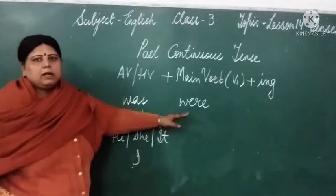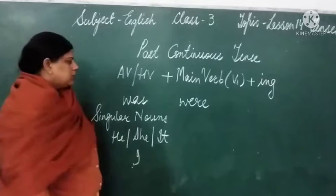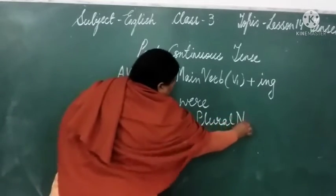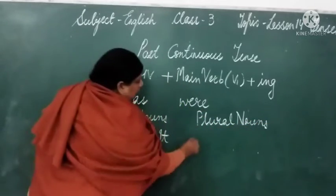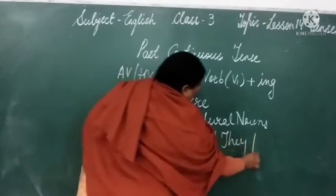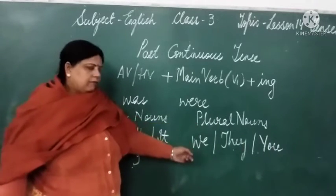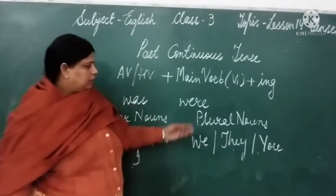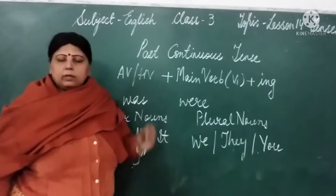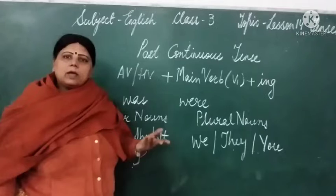Doosra jo helping word hota hai past continuous mein, that is 'were'. Woh hum kahan use karte hain? Jitne bhi plural nouns hote hain — we, they, aur you ke saath. For example: the boys — kitne boys hain? Bahut saare. The boys were walking in the garden. Hum kabhi bhi 'the boys was' nahi kehte.